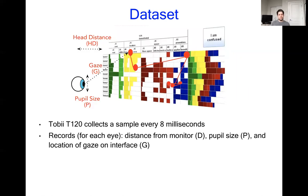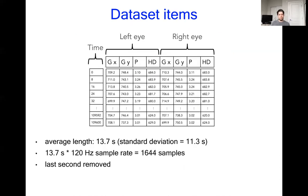The Tobii T120 collects a sample every eight milliseconds, which includes a measure for the head distance, the gaze, and the pupil size. What we get is a matrix where each row represents a sample separated by eight milliseconds, and the columns are the gaze, pupil, and head distance for each eye. With an average length of 13.7 seconds and a sampling rate of 120 hertz, this resulted in samples with over 1600 rows on average. The last second of all examples were removed to prevent the users clicking the I am confused button from being used by the model.